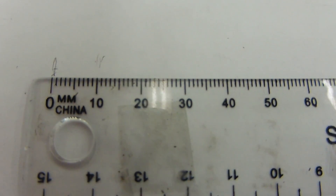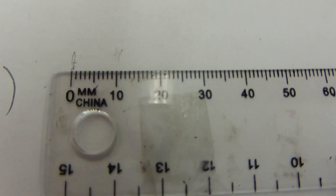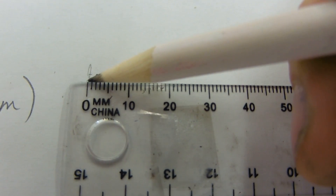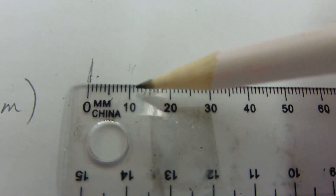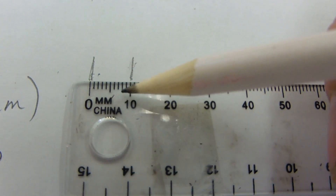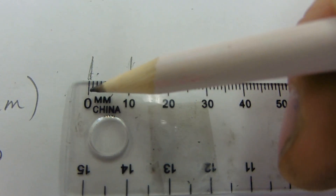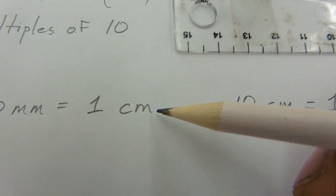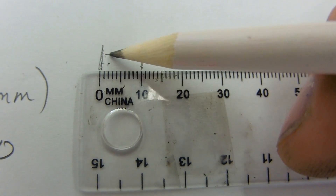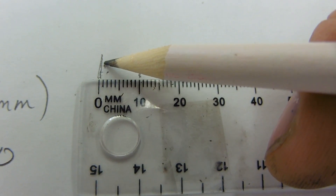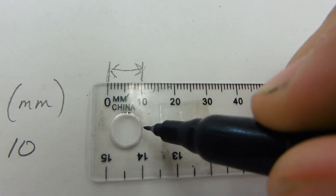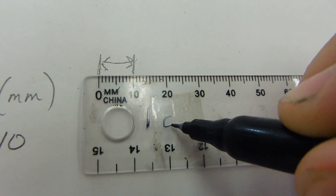If we look at the actual ruler, there's 0 and there's 10. That's 10 millimeters, so each one of those is 1 millimeter. Since 10 millimeters equals 1 centimeter, that distance — even though it's 10 millimeters — is the equivalent of 1 centimeter.